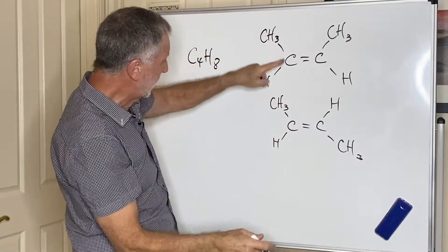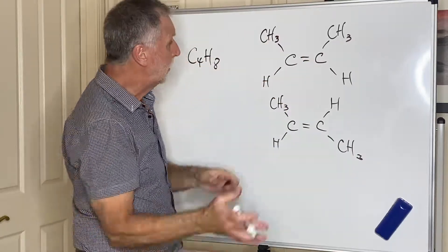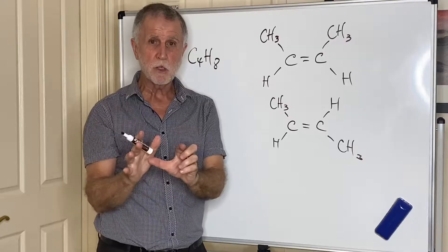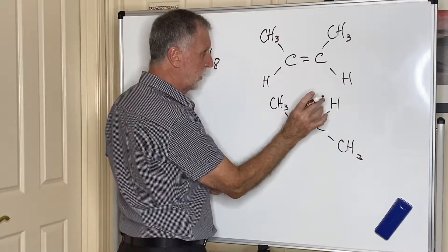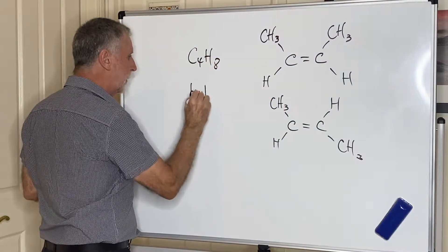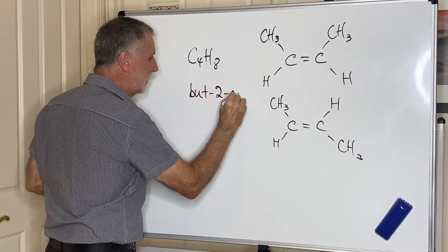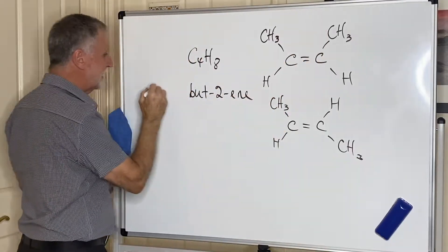So this is a form of isomerism called geometrical isomerism. It's stereoisomerism where you have the same molecular formula C4H8, the same structure because each carbon has the same atoms or groups attached to it, but a different arrangement in space. This is called geometric isomerism, and to distinguish the two but-2-enes, this is called the cis isomer.